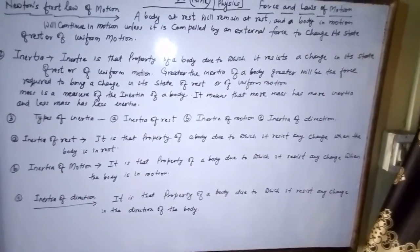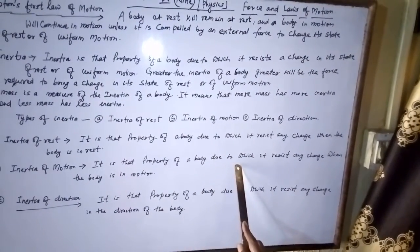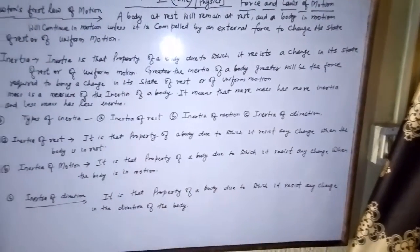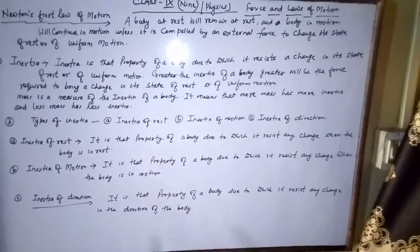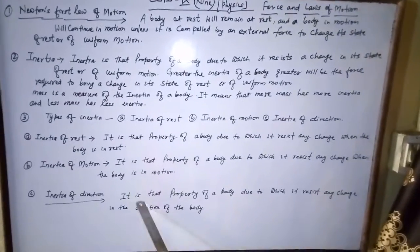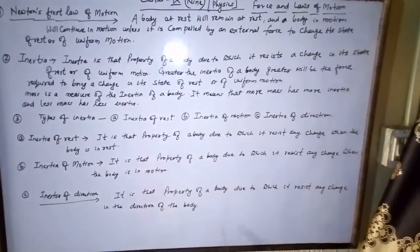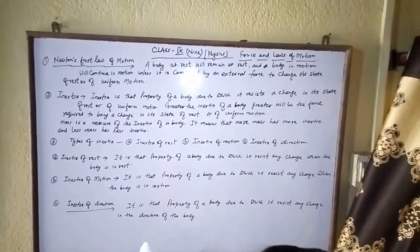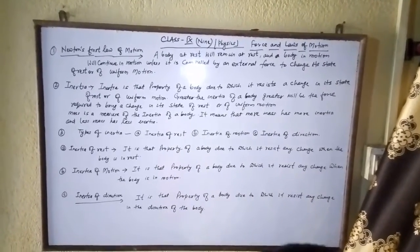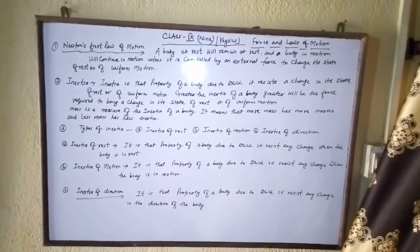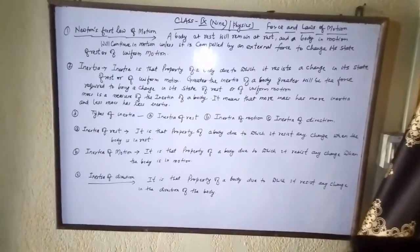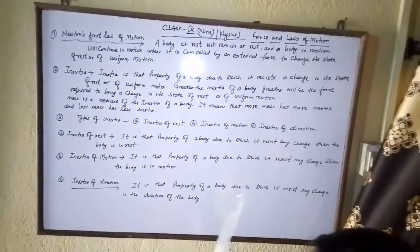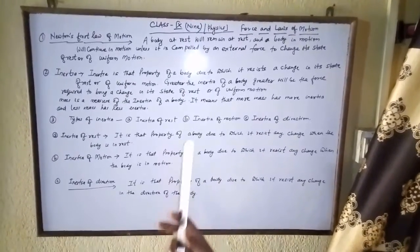Inertia of motion वह गुण है जो चाहता है कि वस्तु लगातार चलती रहे — उसमें कोई बाधा न डाले। Inertia of direction वह property है जिसमें कोई वस्तु अपनी दिशा बदलने से रोकती है। जैसे कार या बाइक चलते समय direction बदलते हैं — inertia of direction उसमें रुकावट डालता है। External force लगाने पर ही यह होता है।